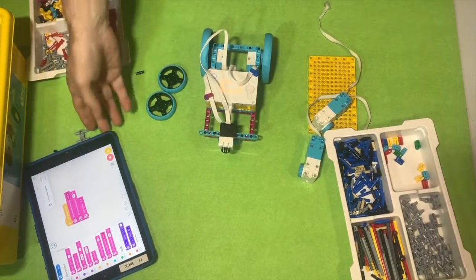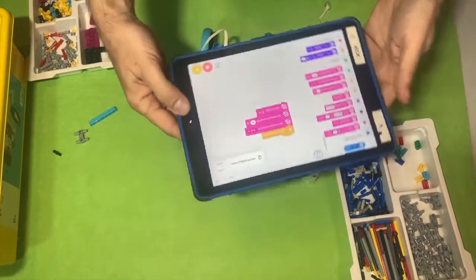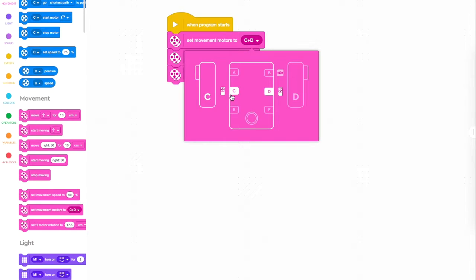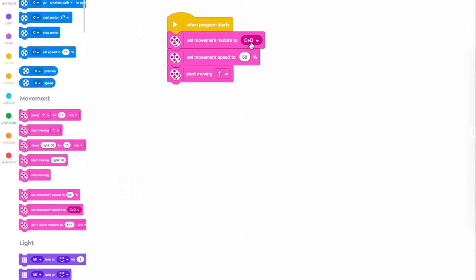And when you're coding a simple robot, you've got to make sure that you tell the hub which ports are being used for the movement motors. So you need to grab the pink block that says set movement motors, and we plugged them into C and D. So make sure that it says C and D when you set the movement motors. That's the first block. It has to be there if you want your car to move. And then you can adjust the speed. Maximum would be 100%, and then you can say start moving.